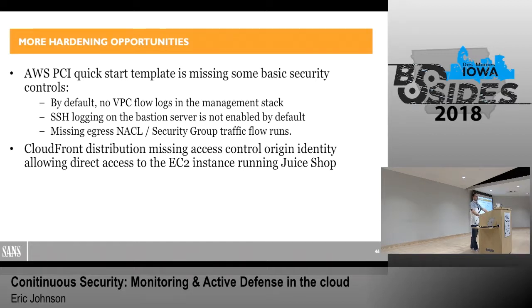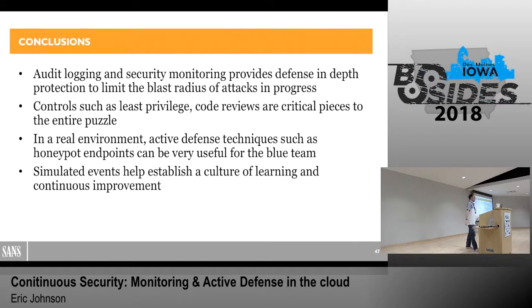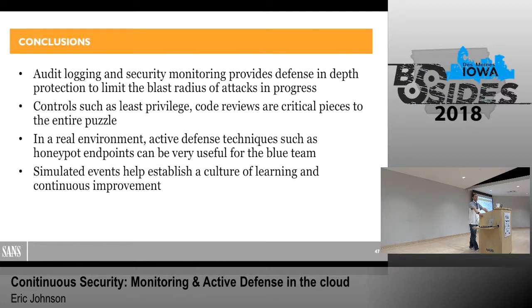We've also got the CloudFront distribution that was forwarding traffic into the vulnerable OWASP application — it was missing an origin access identity, which means you could skirt around CloudFront and the WAF and connect directly to the instance, bypassing all of the security features. Doing the exercise as a whole — I would highly recommend it. On a Friday afternoon, get some devs, some ops folks, some engineers, some security folks all in the room and just play this game and do the postmortem together. We identified in just an hour a whole bunch of different places that were missing monitoring and security that you would not want to be finding for the first time while you're being attacked. Playing the game can help you build your defenses out. Code reviews — someone reviewing that WordPress app would have easily seen those credentials in a config file. Honeypot endpoints are awesome — that was my one big win from the whole thing.